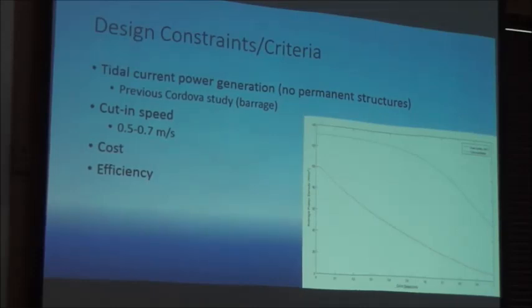These were some of the design constraints and criteria. The biggest rule was no permanent structures of any kind. The cutting speed, the speed at which it starts to provide power, was determined to be about half a meter per second. The blue line is the power density given a certain cutting speed, and the red line is the percentage of time that the turbine is operating. Clearly cost and efficiency are things that are worthwhile goals: low cost and high efficiency.